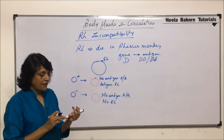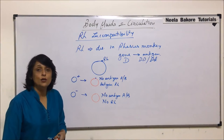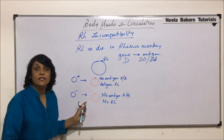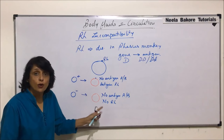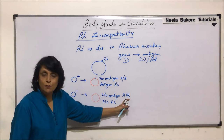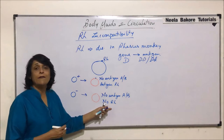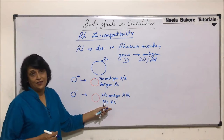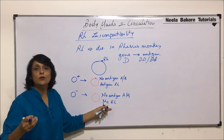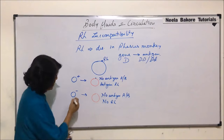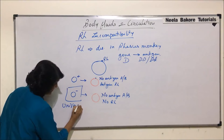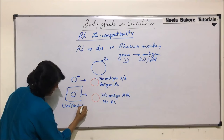That is why, when we were talking about universal donors and recipients, O negative is considered the universal donor. Because it is not bringing antigen A or antigen B, and it is also not having the RH antigen. Therefore, there is no foreign antigen going into the body of the recipient, and that is why this is the universal donor.